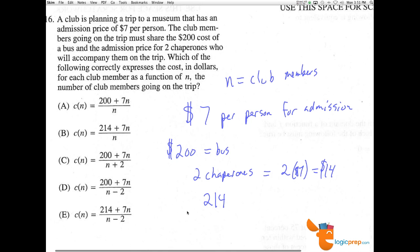The club members are going to have to pay, so the cost function c(n) equals $214 for the bus and two chaperones, plus 7 times n for all the tickets. We divide this entire cost by n, all of the people going.